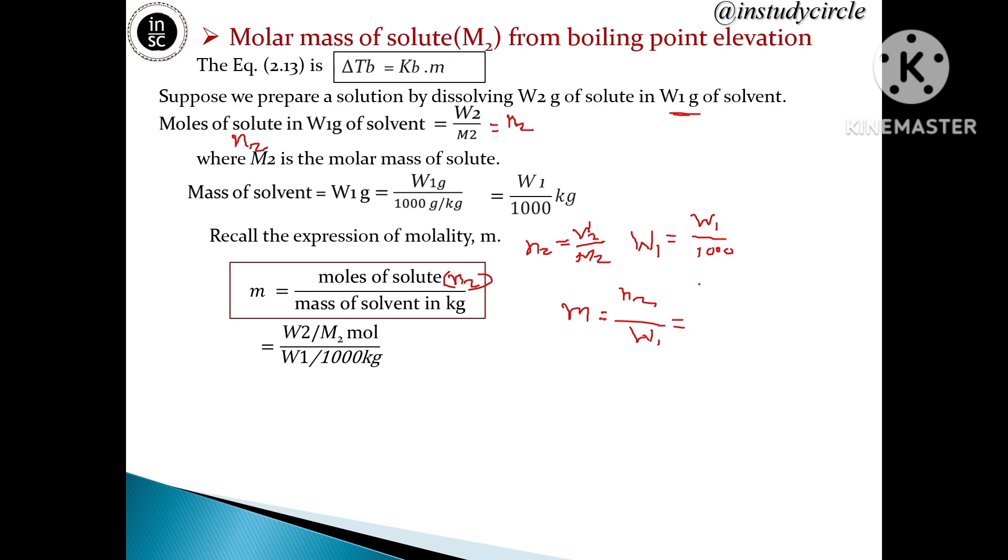Substituting these values: W₂/M₂ divided by W₁/1000. We get molality m = (W₂/M₂) × (1000/W₁), which equals 1000W₂/(M₂W₁) mol per kg.